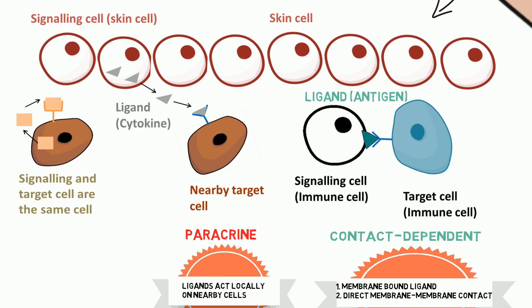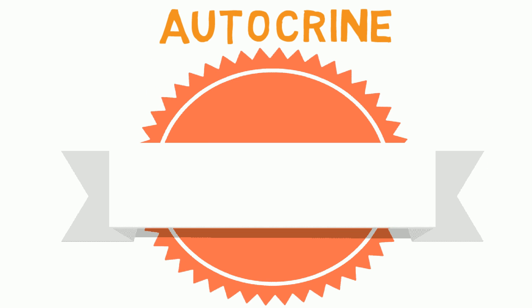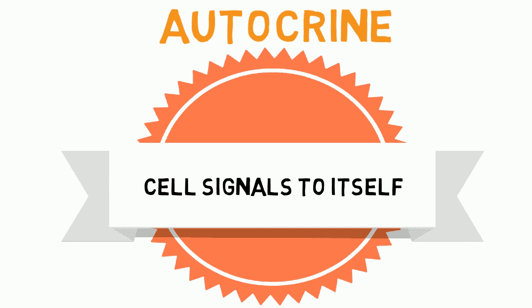Some of the signal molecules released by the cell bind to receptors on the cell membrane of the same cell. This is autocrine signaling, where the signaling cell and target cell are the same, and the cell signals to itself.